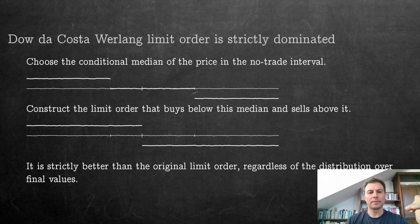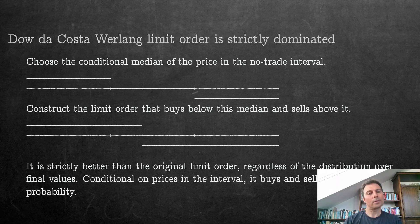It turns out that this limit order is strictly better than the original limit order, regardless of the final value, regardless of the distribution of our final values. So why is that? What we did with choosing this median, basically it means that conditional on the prices in the interval, this person buys and sells with probability 50%, so equally likely. So basically it's like flipping a coin and you're buying or selling. If you do this at every price, then it's the same for a risk-neutral person as not doing anything, because 50% you buy, 50% you sell, so the consequences of this is basically zero.